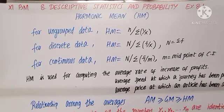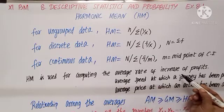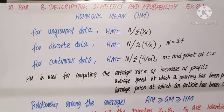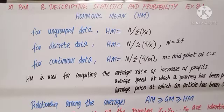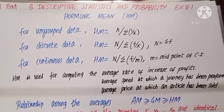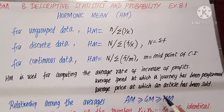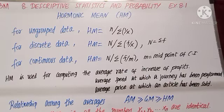HM is restricted in usage. It is mainly used for computing the average rate of increase of profits. In word problems wherever increase of profits are given, we can find the average as HM. It is also used for average speed at which a journey has been performed, and average price at which an article has been sold.